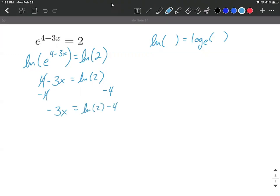And then to finish this up, we want to get x all by itself, we need to get rid of the negative 3. So we're going to utilize division on both sides, divide by negative 3. That makes a one. So we have an exact answer, the natural log of 2 minus 4 all over negative 3.